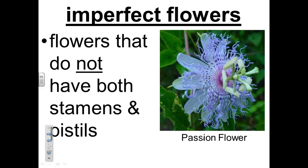Not all flowers have both stamens and pistils. Flowers with only one of these parts are called imperfect flowers. Some maple trees have imperfect flowers. Flowers with both parts are called perfect flowers. The passion flower shown here is a perfect flower.